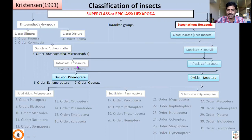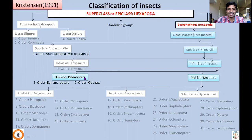In the previous insect systematic lectures, we studied the general characters of five orders which include three non-insect hexapod orders and two apterygote true insect orders. So now we are concentrating on infraclass Pterygota, and in this class I will be talking about division Palaeoptera, which consists of two orders: order Ephemeroptera and order Odonata.